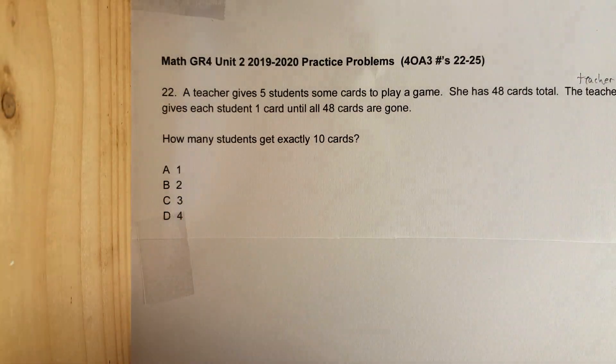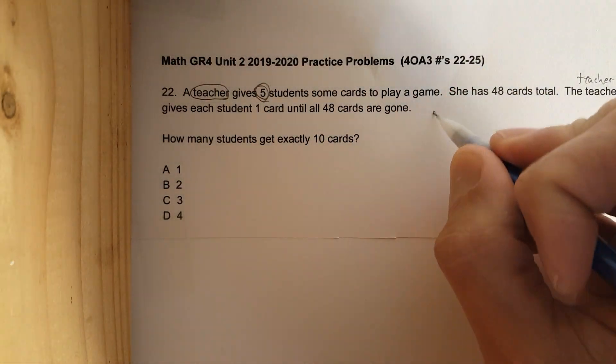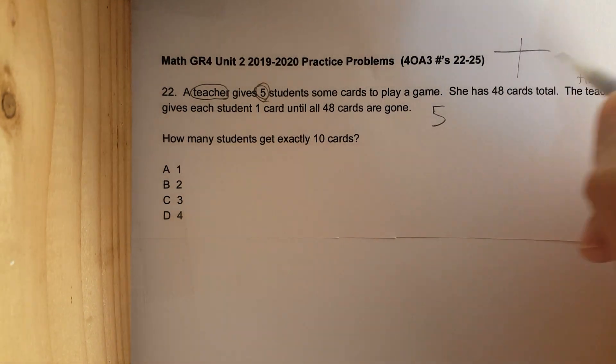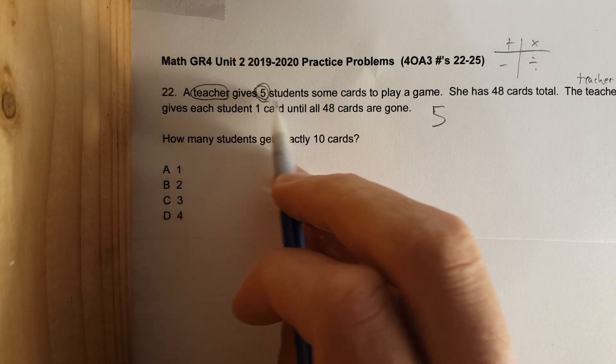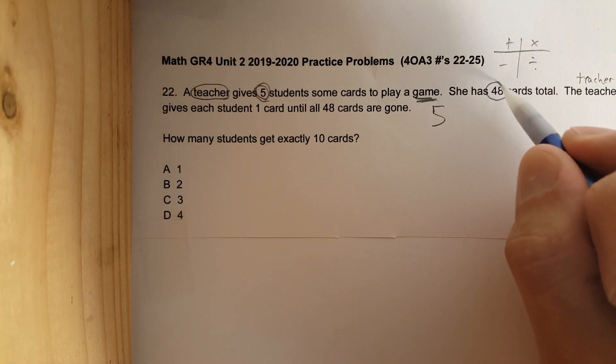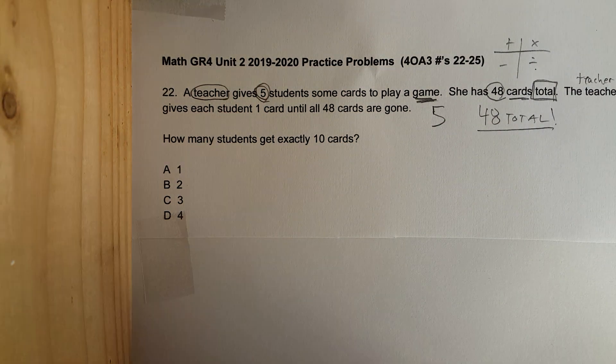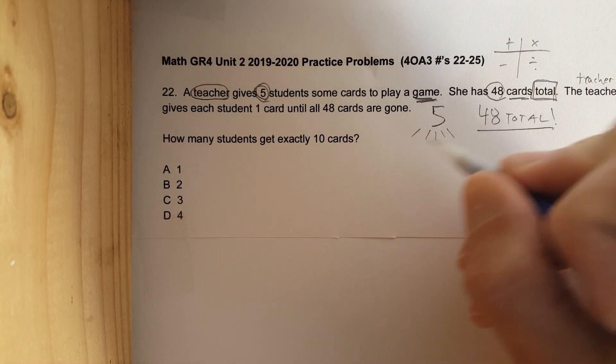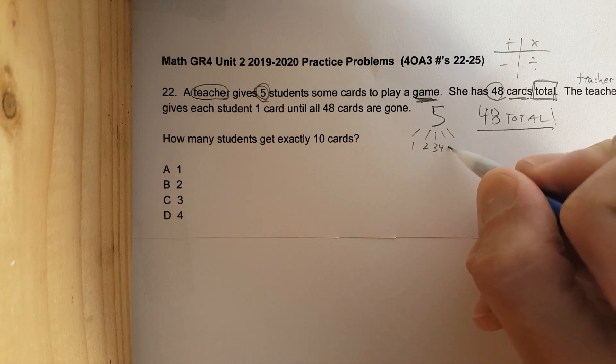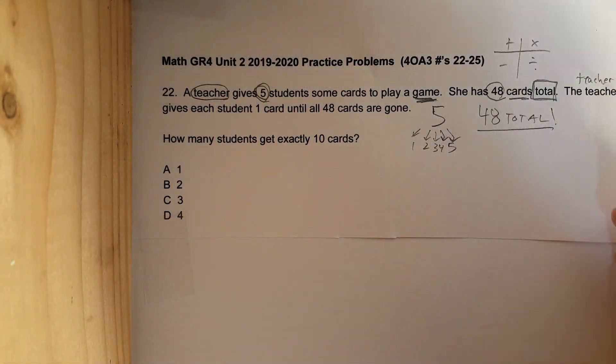A teacher gives five students—let's just pull out those numbers right away. Remember this is math, you are dealing with numbers: add, subtract, multiply, divide. A teacher gives five students some cards to play a game. About time we play some games. She has 48 cards total, 48 total. Remember that: five students, one two three four five.